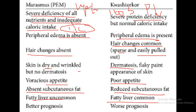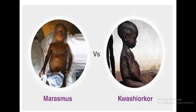Marasmus has a better prognosis and kwashiorkor has a worse prognosis — meaning the chances of symptom reduction with better diet provision are higher in marasmus and very less in kwashiorkor. This is an image of a child with marasmus, and this one shows kwashiorkor, where a protruding belly is present.